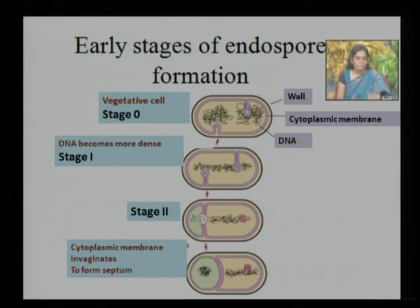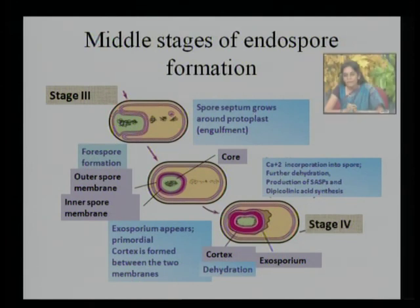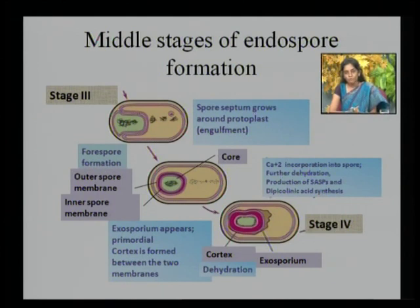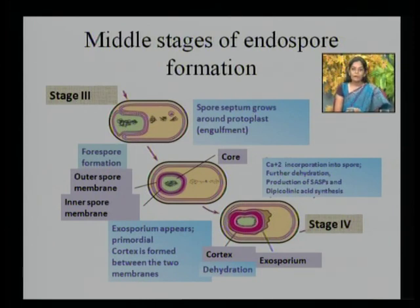In the middle stages, the smaller cell undergoes an unusual mechanism resembling phagocytosis. The smaller cell is completely engulfed within the larger cell and is known as a forespore. This forespore is a protoplast whose inner part is called the core, enclosed by two concentric sets of unit membrane: its own bounding membrane and the membrane of the mother cell surrounding it. The cortex then develops between the two membranes surrounding the forespore.